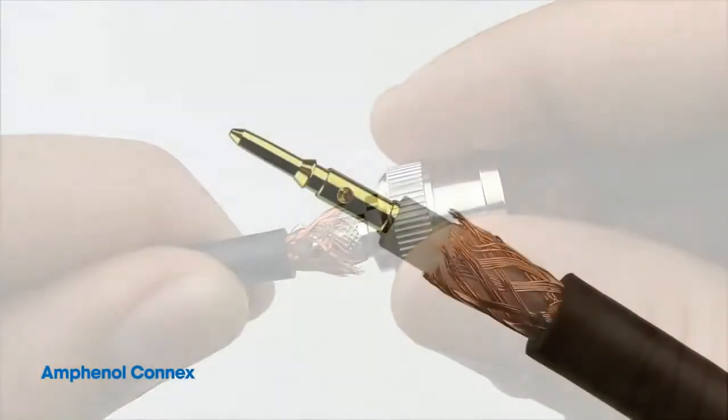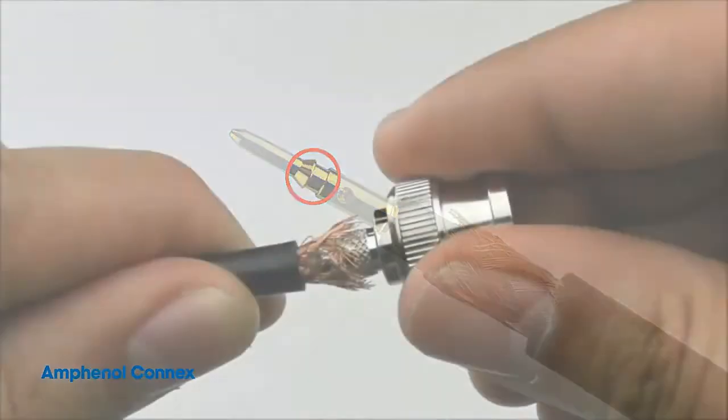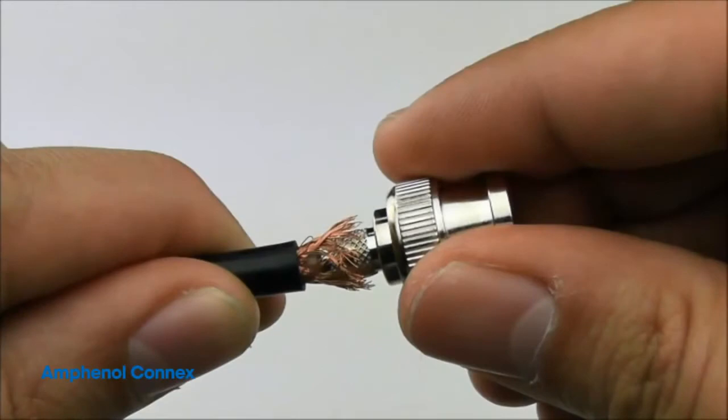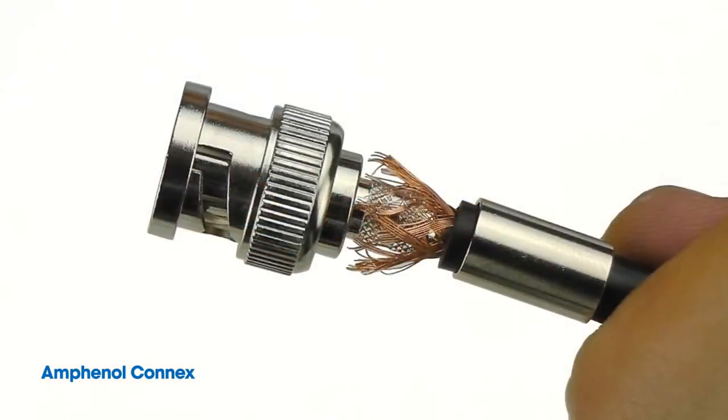Note that this connector has a captivated contact, meaning that the contact will lock into place when it is fully inserted. Listen for the snap when the contact locks into place. Here is what it should look like if done correctly.